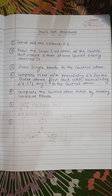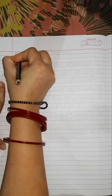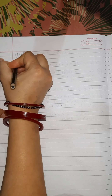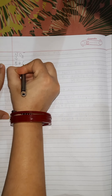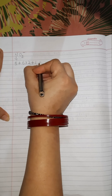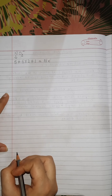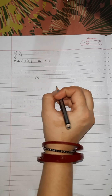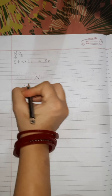Now let's draw one more Lewis dot structure — that is NO₂⁻. First, count the valence electrons: nitrogen has 5, oxygen has 6 multiplied by 2, plus 1 due to the negative charge. The total number of valence electrons is 18. Place nitrogen at the center as the least electronegative atom, with both oxygens around it, and join them with single bonds.